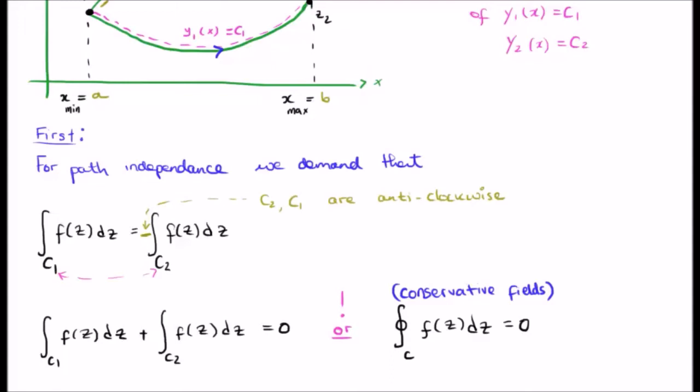Of course for path independence, going by c1 and c2 should be irrelevant. Mathematically, we can establish this by saying that the integral of f of z dz along c1 has to be minus the integral of f of z dz along c2. Of course we can rewrite this and see that their sum is zero.